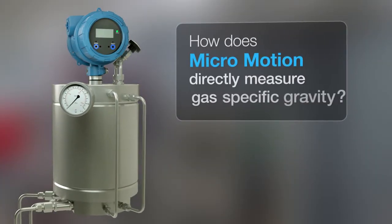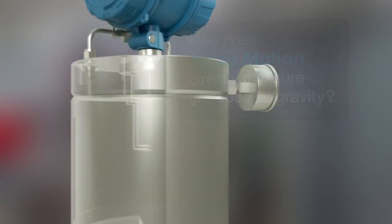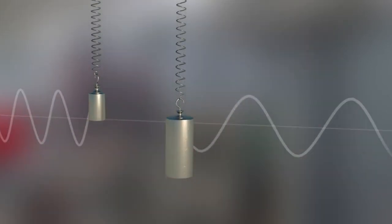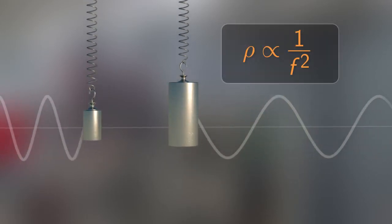How does Micromotion directly measure gas-specific gravity? The Micromotion Specific Gravity Meter, or SGM, builds off the foundation of vibrating element gas density meters, using the principle that frequency of vibration is inversely proportional to density.